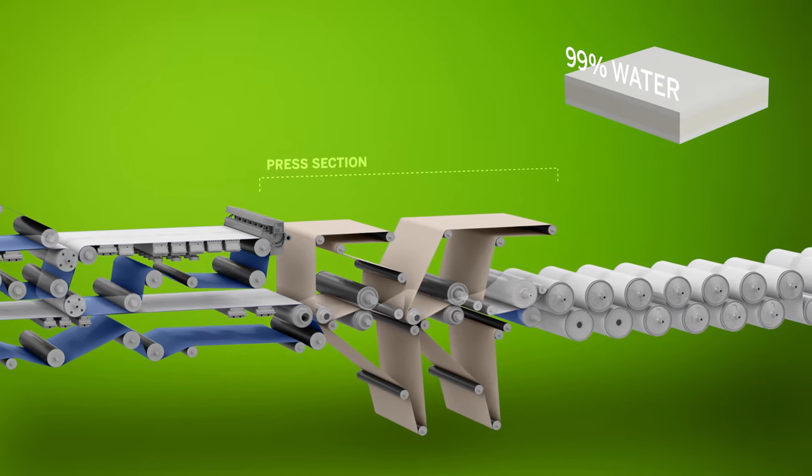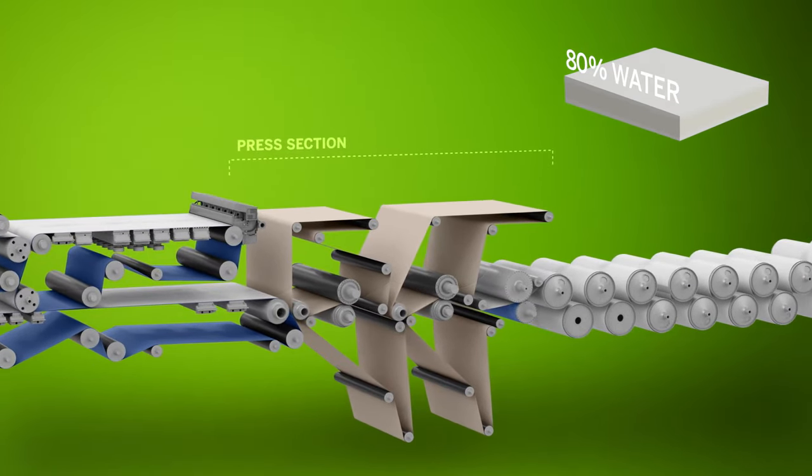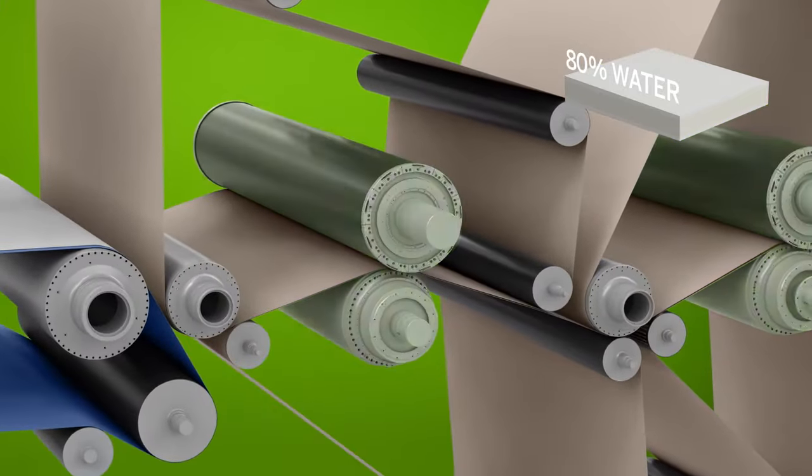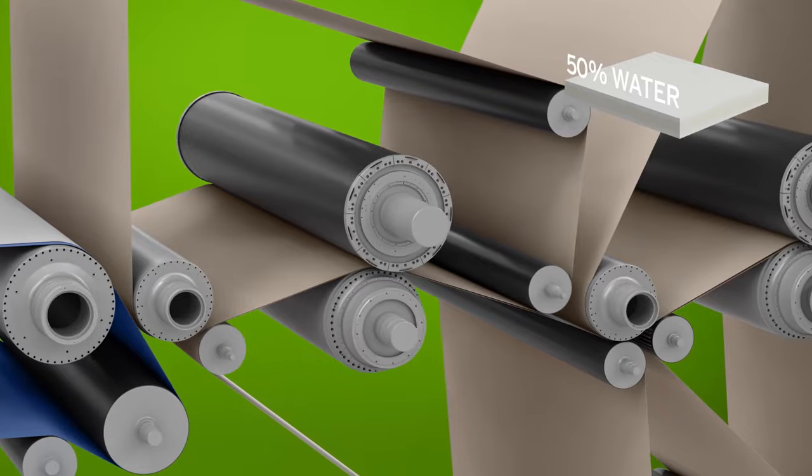The three-layer fiberboard web passes from the wire section into the press section, where water is squeezed out with high-pressure nip rollers. Excess water is absorbed by press felts between the rollers.